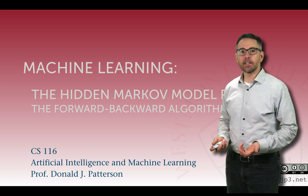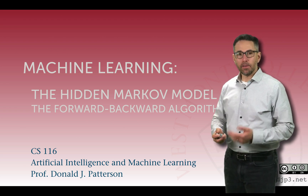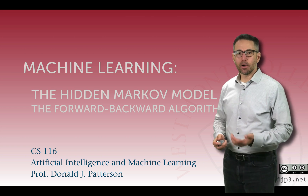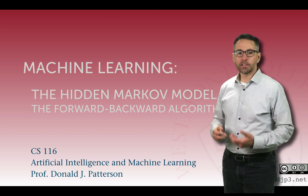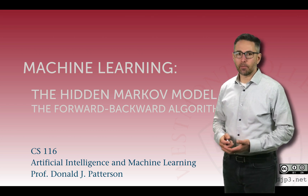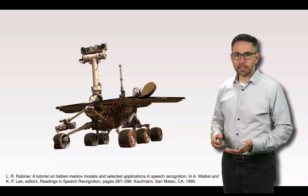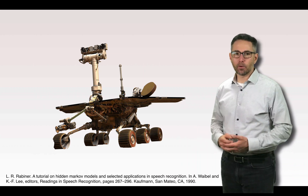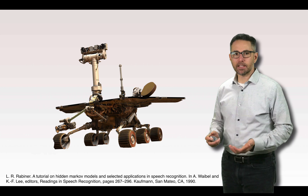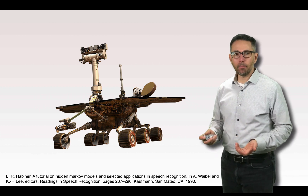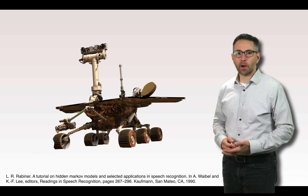In this video I want to continue the discussion about the hidden Markov model. In the last video we looked at a motivation for the forward-backward algorithm, and in this video I want to describe it in detail. We were motivated by a robot that moves around a room where the different locations in the room are the different states.